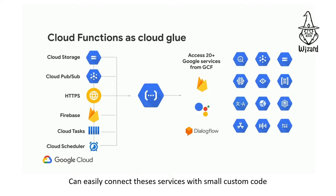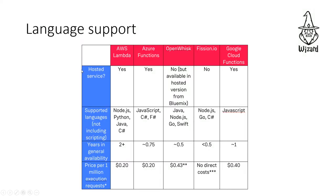You can also access AWS and Microsoft Azure Cloud Functions. If you use language support for Cloud Functions, you can access AWS Lambda with Node.js, Python, Java, and C#. You can also support PHP. For Azure, JavaScript, C#, and F# are supported.